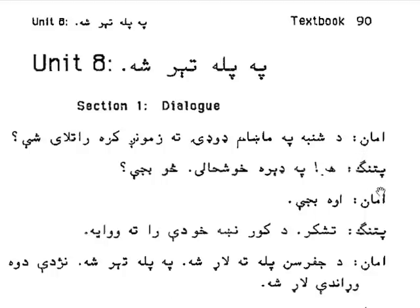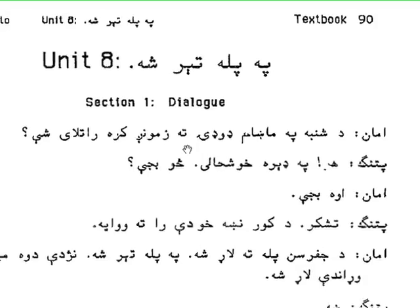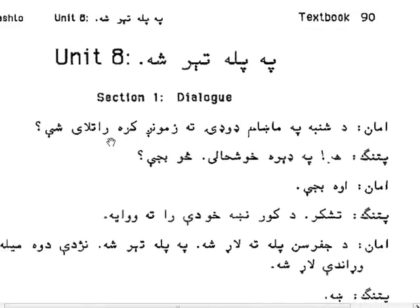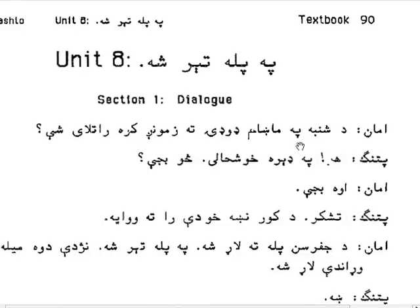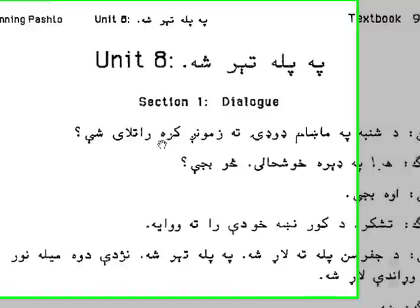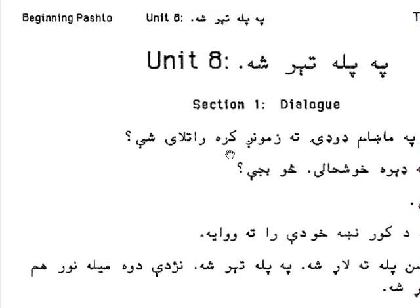Aman and Patan are having a conversation. Aman is asking Patan: Shamba, which means Saturday, at dusk, food, to, zmun — our — krah or korta, which means home in other dialects — ra tle she, which means can you come to our house?